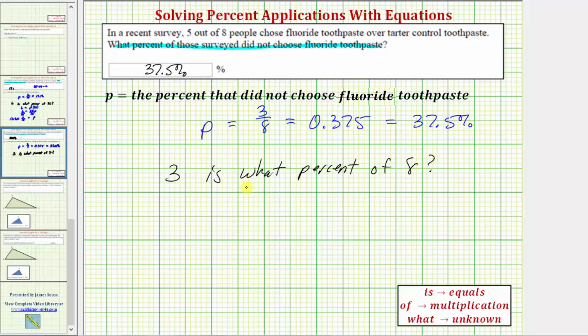To help us write the percent equation, we can use these key words, where 'is' means equals, 'of' means multiplication, and 'what' represents the unknown, which in our case is p, for the percent that did not choose fluoride toothpaste.